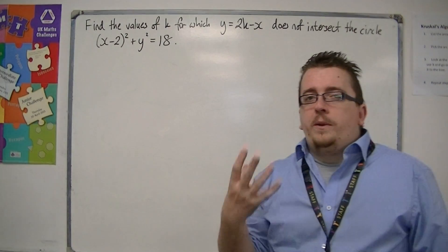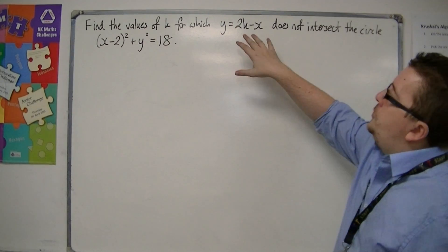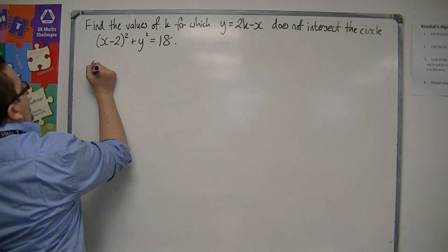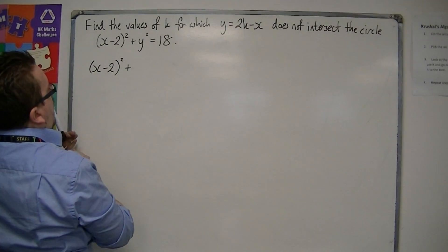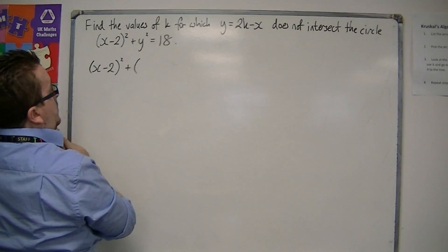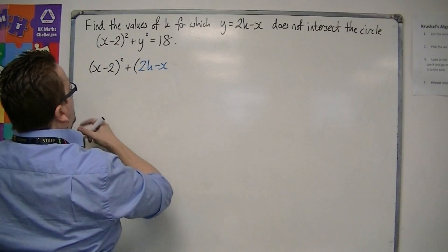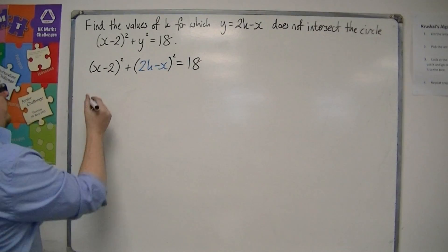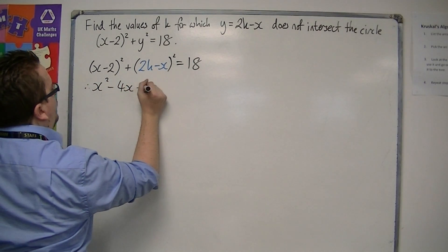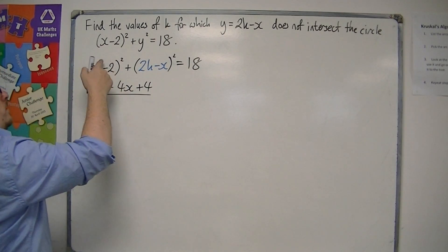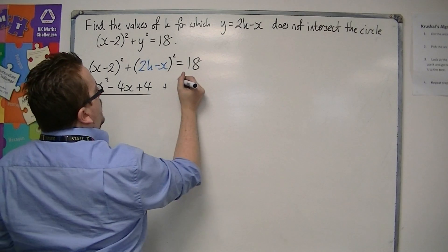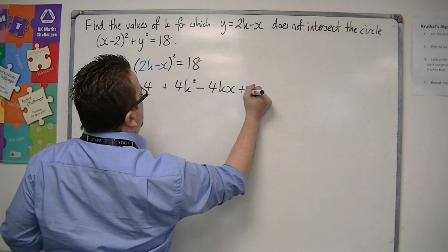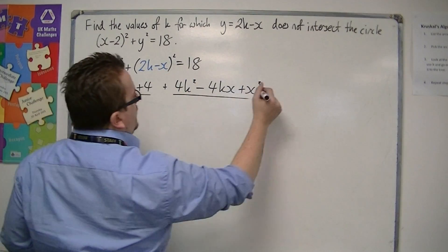Because we're looking at intersections, we're going to have to substitute this equation into the equation for the circle. So we have x minus 2 all squared plus y, which is 2k minus x, all squared, is equal to 18. We then want to multiply out the brackets, giving us x squared minus 4x plus 4, from the first bracket, plus 4k squared minus 4kx plus x squared, from the second pair of brackets, is equal to 18.